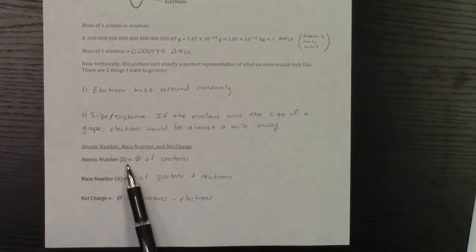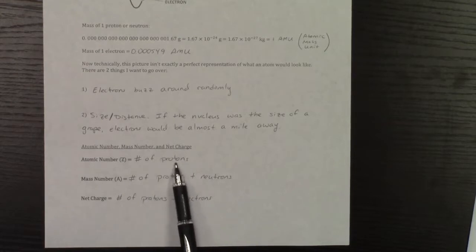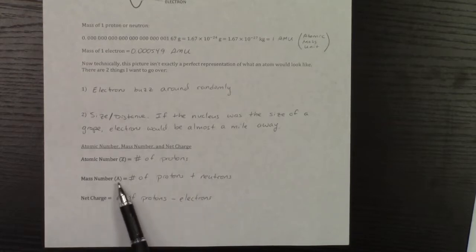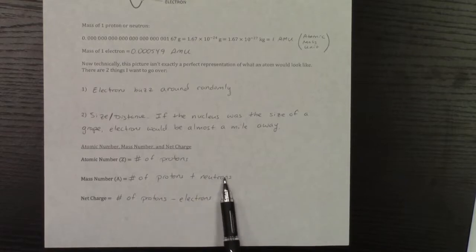Now your atomic number, which is Z, is going to be the number of protons. Your mass number, which is A, is going to be the sum of the protons and neutrons.